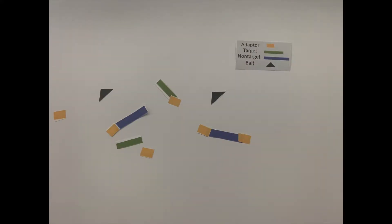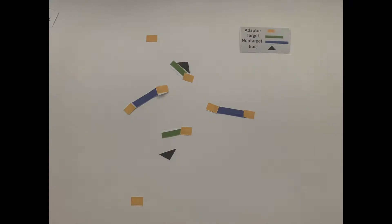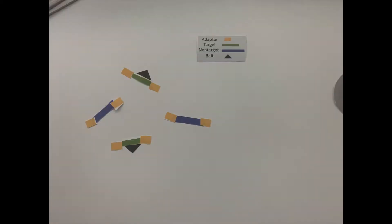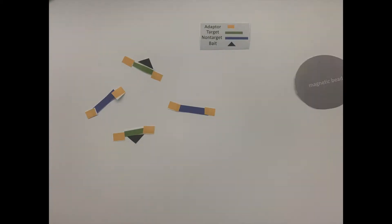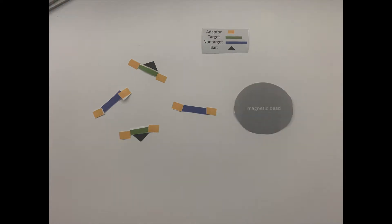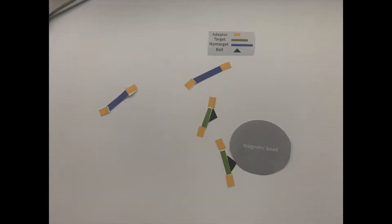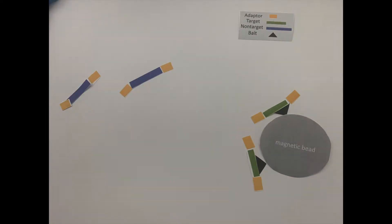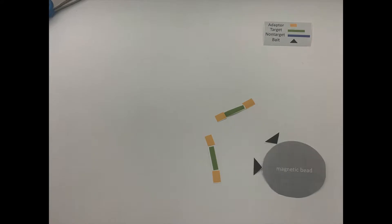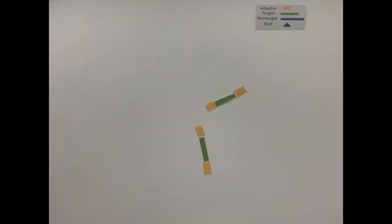Baits are magnetic probes that latch on to and identify your target DNA. Once everything is settled, magnetic beads are used to separate the target DNA from non-target DNA. The target DNA is then taken off the bead and put back into solution. It's then amplified and ready to be sent off to a sequencing facility.